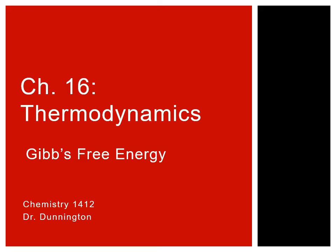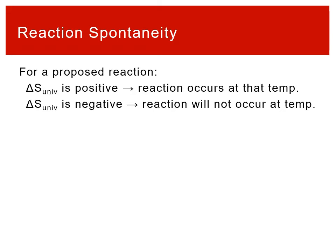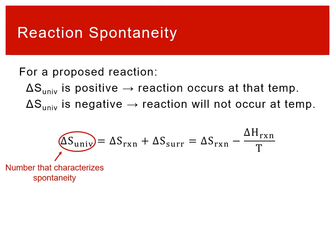We left off saying we needed a new thermodynamic variable — that variable is Gibbs free energy. The second law tells us that reaction spontaneity is described by the sign of the change in the entropy of the universe for our reaction. For something to be spontaneous, it needs to cause a positive change in the entropy of the universe. A negative change means it's a non-spontaneous process — those reactants are not going to turn into products.